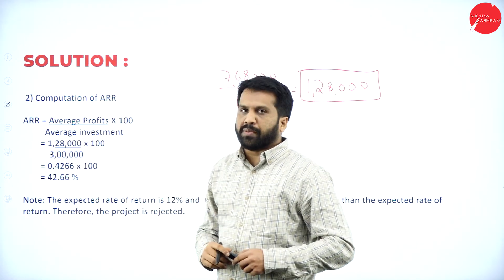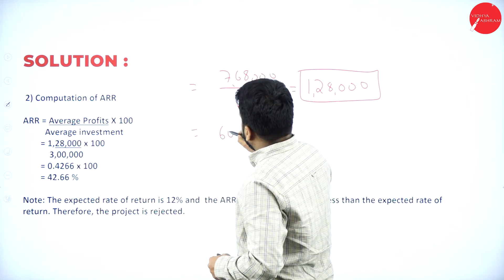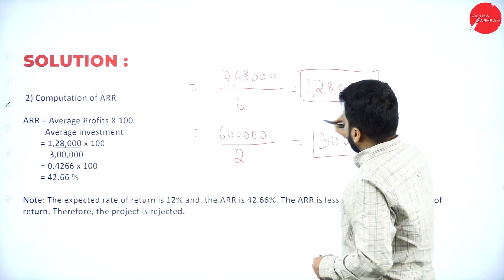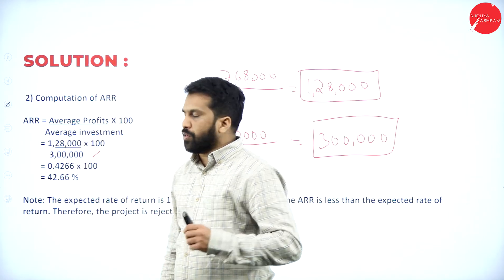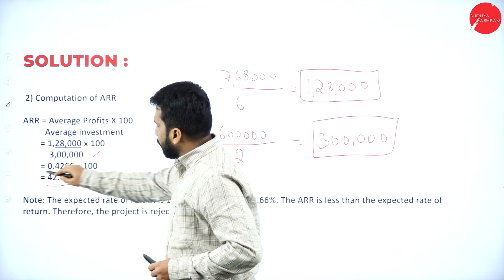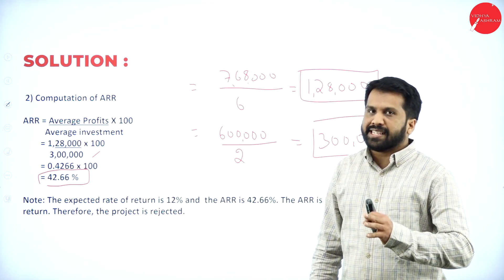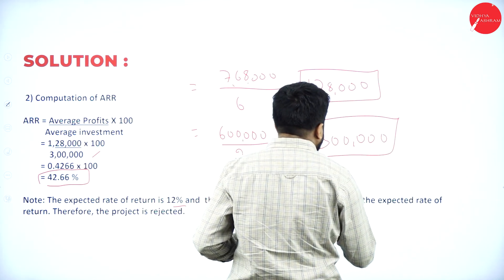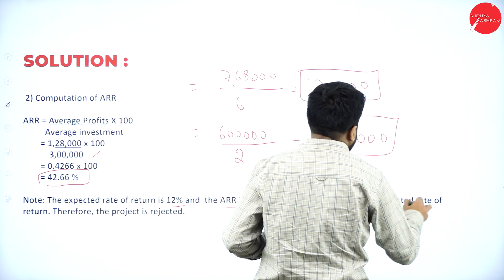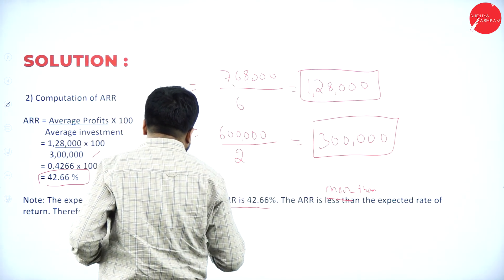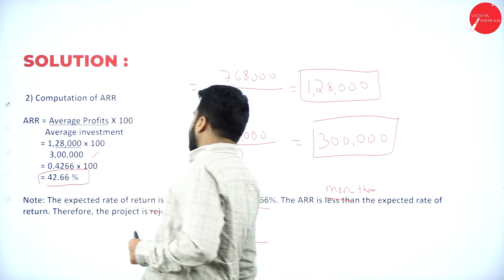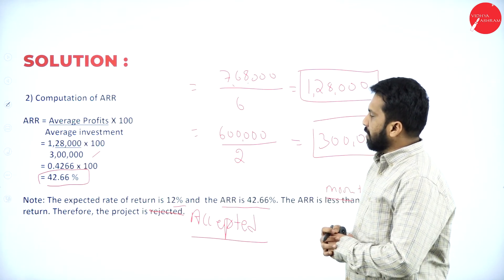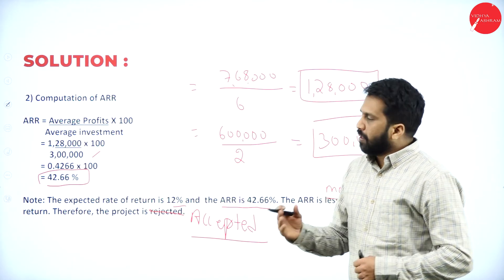Average investment: investment is six lakh; divide by two gives three lakh. So ARR equals one lakh twenty eight thousand divided by three lakh, multiplied by 100, which gives forty two point six six percent. The expected rate of return is twelve percent and ARR is forty two point six six percent. Since ARR is more than the expected rate of return, the project is accepted.